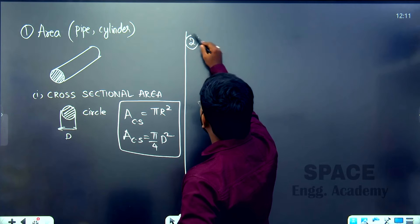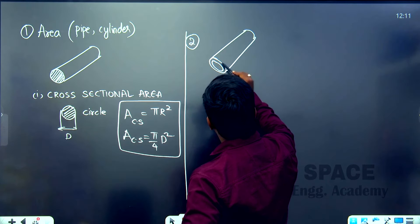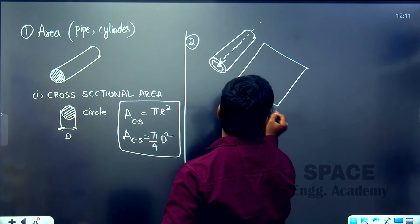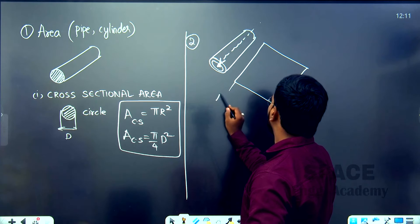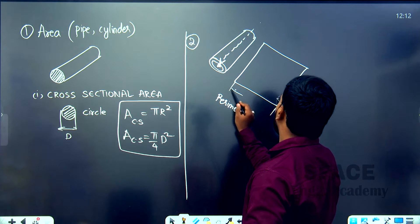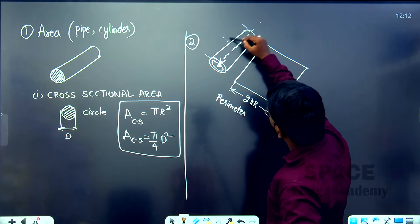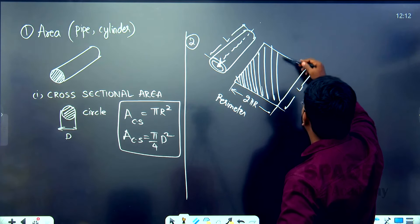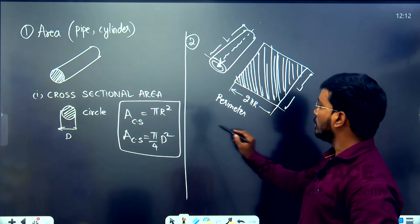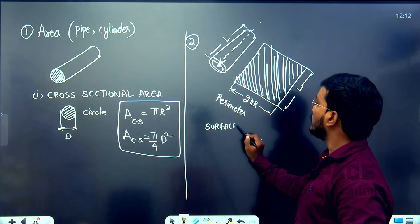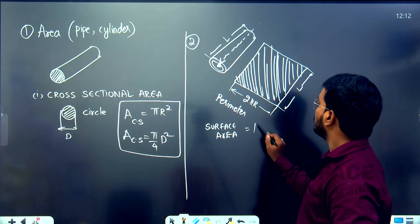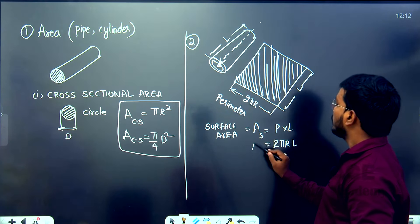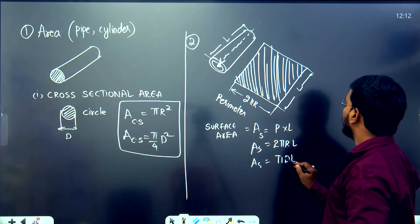The second area is surface area. Suppose we cut a pipe from the center and open it — it becomes a flat sheet. The perimeter of the circle is 2πr, and the length of the pipe is L, so the entire sheet is the surface area. The surface area of a cylinder equals perimeter × length = 2πrL, which can also be written as π·d·L.